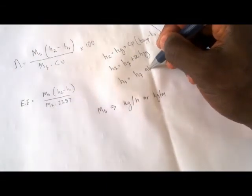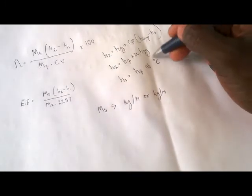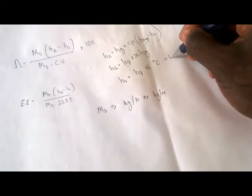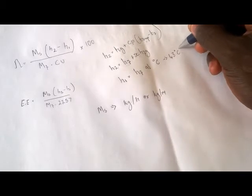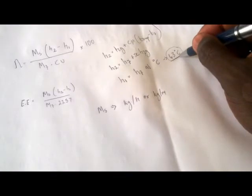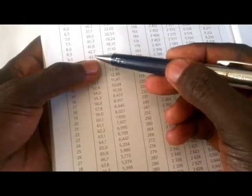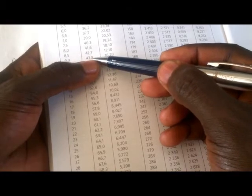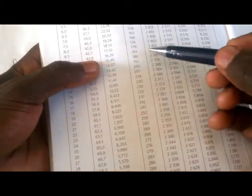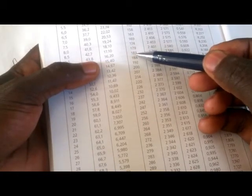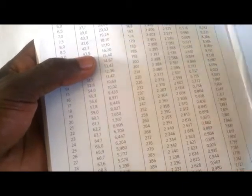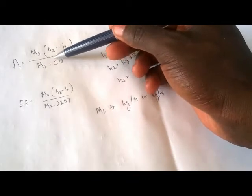Then h1 is the liquid enthalpy hf at the feed water temperature. They will give you the feed water temperature. For example, if the feed water temperature is 43 degrees Celsius, you go to the steam table at 43 degrees Celsius — let's take it as 43.8 — and under that temperature you read your liquid enthalpy, which is going to be 183. This is how you attempt the boiler efficiency calculation.